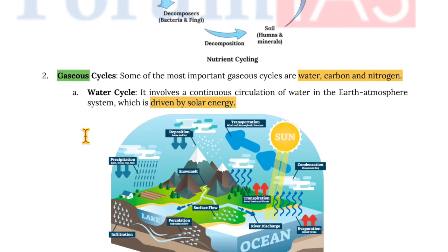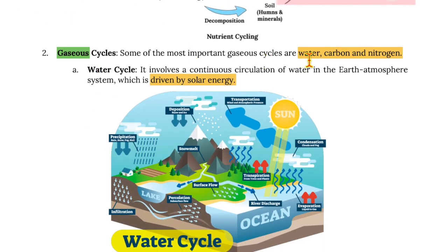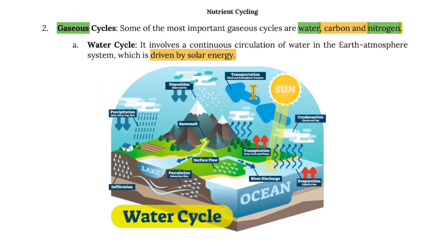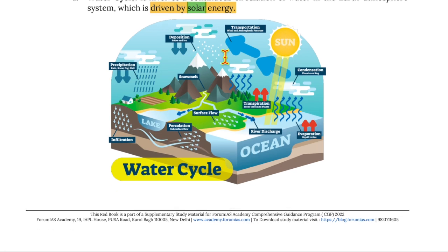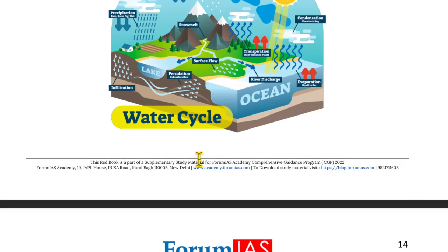Moving on to the gaseous cycle, some of the important gaseous cycles are the water, carbon, and nitrogen cycles. The water cycle involves a continuous circulation of water in the earth's atmosphere system, which is driven by solar energy. The major processes involved are condensation, transpiration, and precipitation, and the rest are given in the diagram itself.